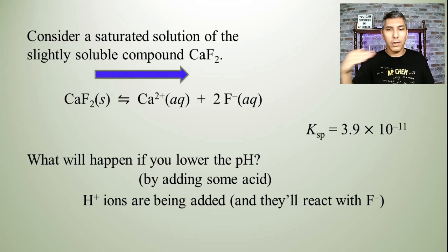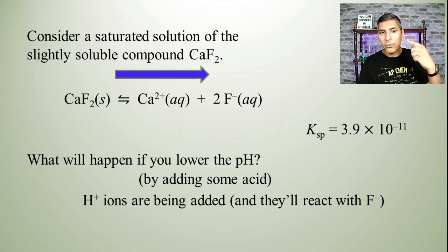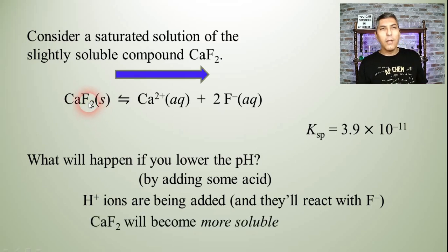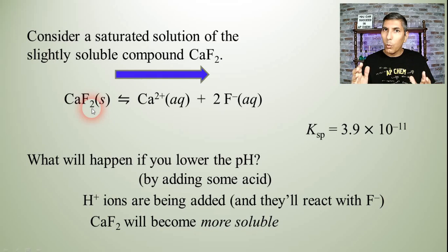Well, it's going to shift toward the right this time, toward the product side. And so, that means that from our point of view, we're going to actually observe the calcium fluoride becoming more soluble. And so, that's what's going to happen if we lower the pH. And so, here's another case where we're going to see that the pH and the solubility of these ionic compounds are related to each other.